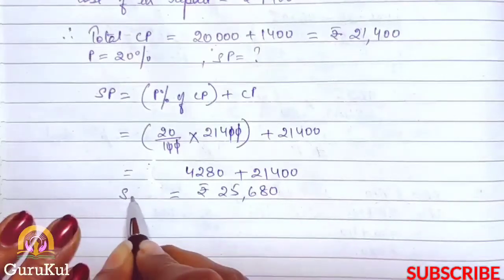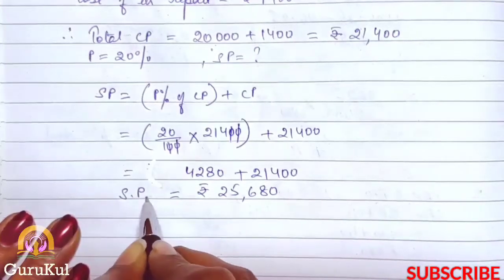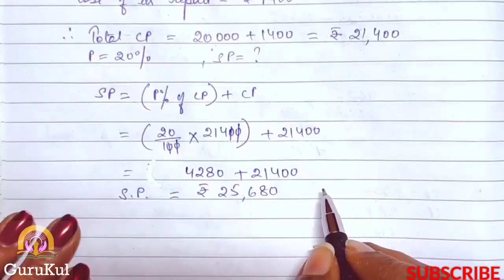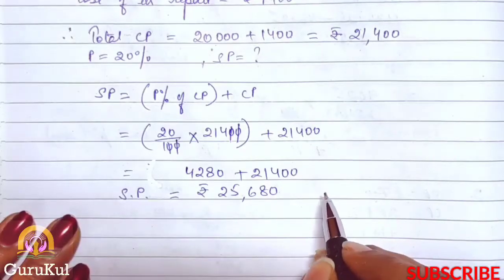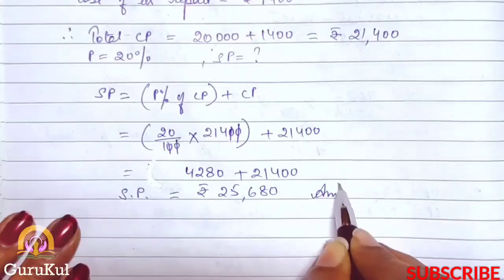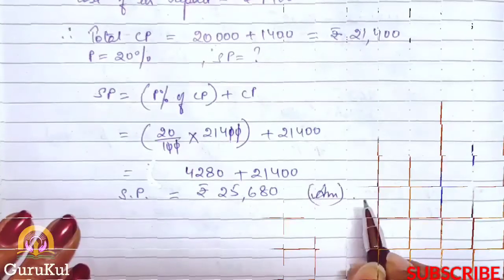So this is the selling price of the article which was sold at a profit of 20 percent. This is the answer.